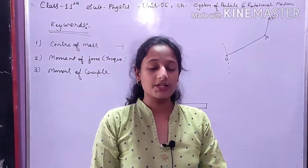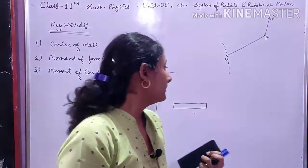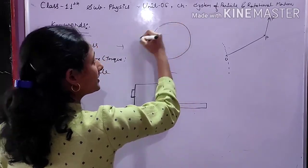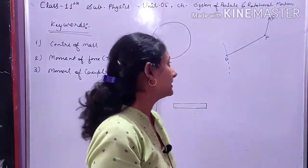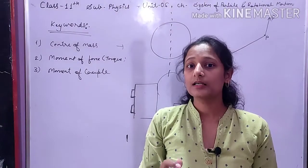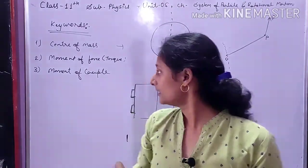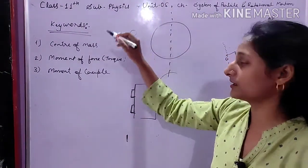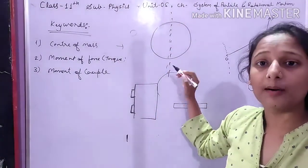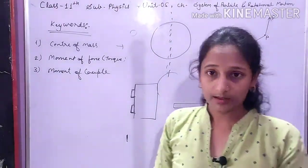If the rotation axis is inside the body — like the Earth rotating about its own axis — that is rotational motion. But when the Earth revolves around the Sun, that is circular motion. So we distinguish: motion about its own internal axis is rotational motion, while motion along a circular path around an external point is circular motion.